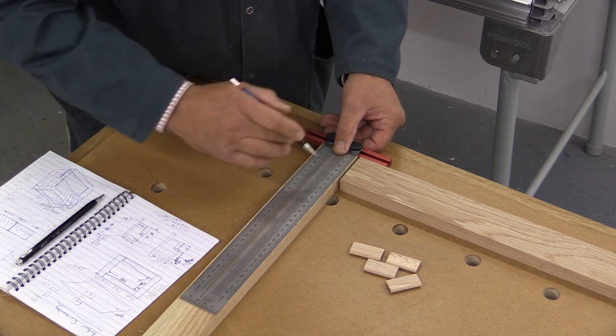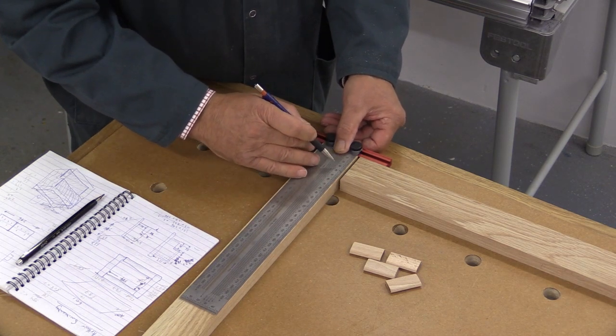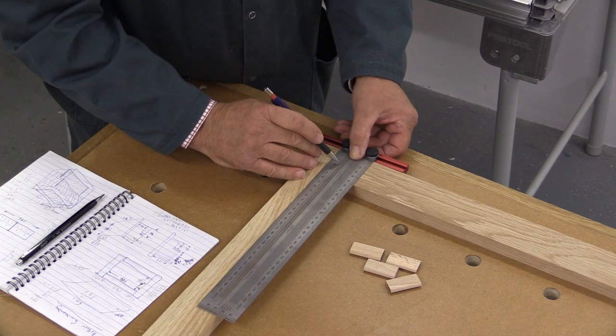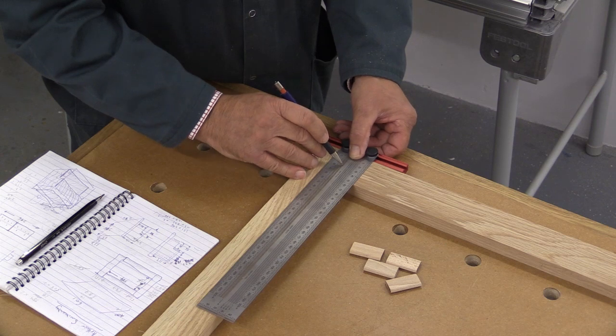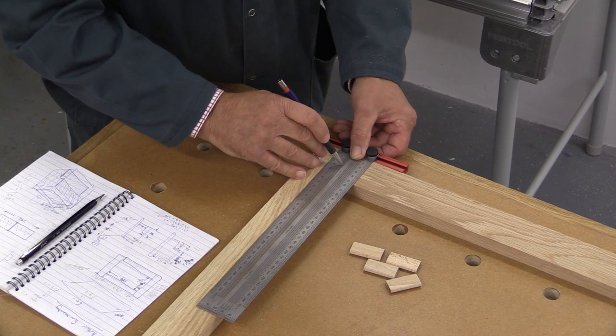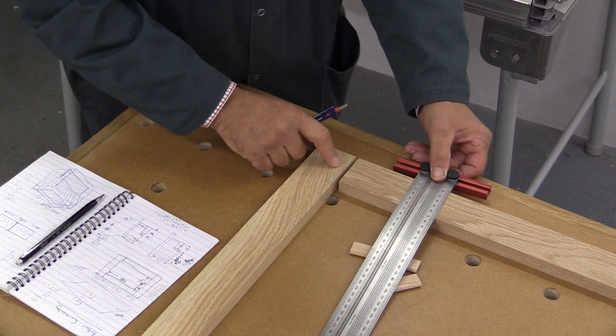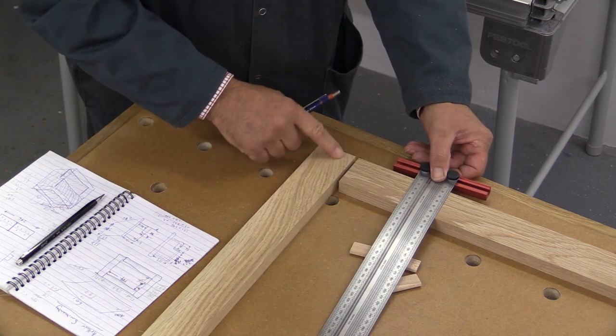And so I want to put a mark here at 26 and a half millimetres. So I go here to the 26, go to the next division along which is the half which is the 26 and a half and there I have my mark there, 26 and a half millimetres from that end.